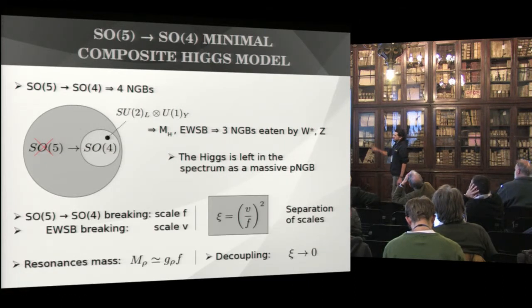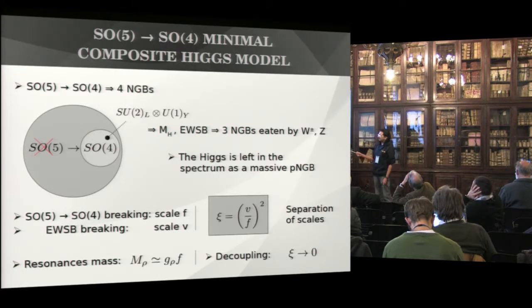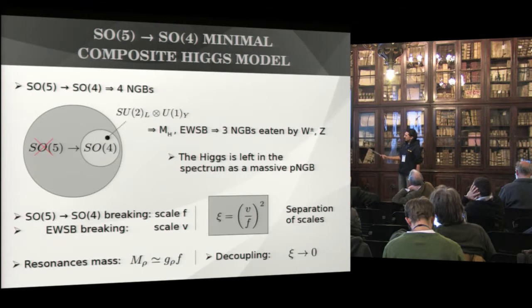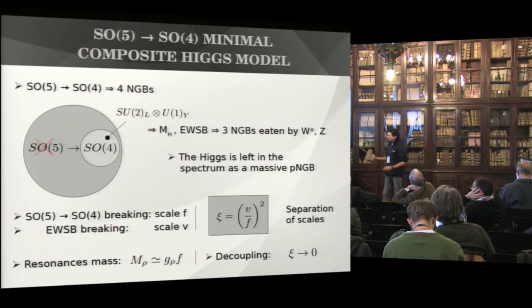We have two breakings, two scales. We can define the separation of scales. Resonances will appear with a mass, which will be roughly the scale F times some strong coupling, and the decoupling effect of the whole composite sector will be achieved as F goes to infinity with V fixed, and xi tends to zero. If xi tends to zero, basically, we're left back with the standard model Higgs-Lagrangian with an elementary Higgs.